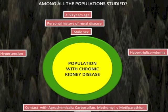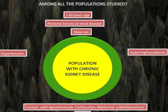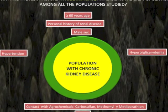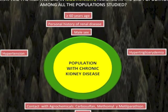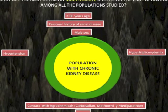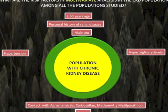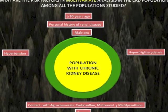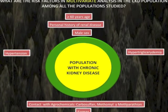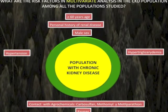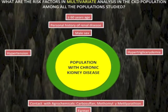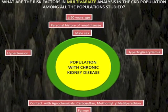The logistic model revealed that the probability of developing CKD was significantly influenced by age, personal history of renal disease, male sex, hypertension, hypertriglyceridemia, agrochemical exposure — specifically carbosulfan, methamil, and methylparathion — and agricultural occupation, all significantly associated with the presence of CKD.